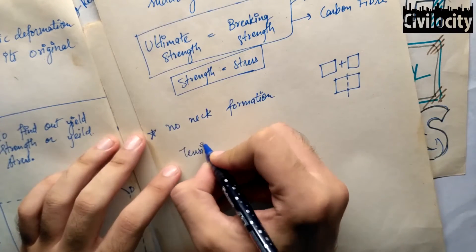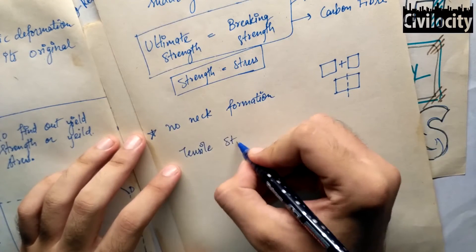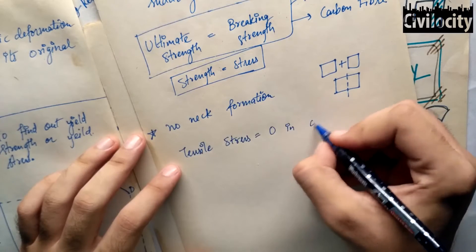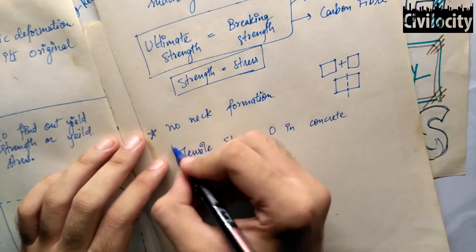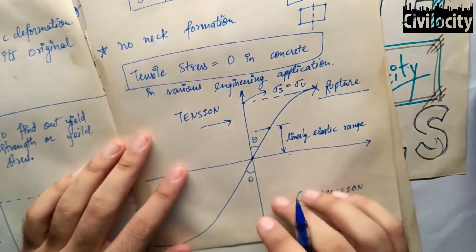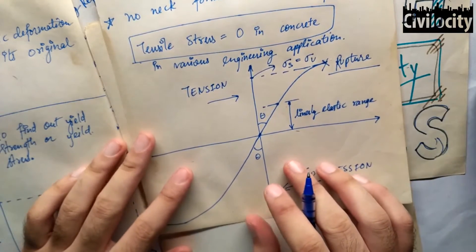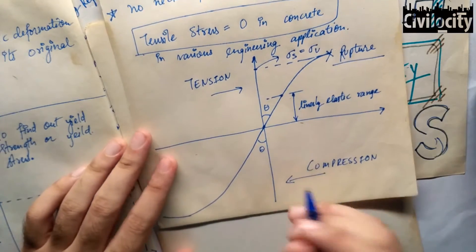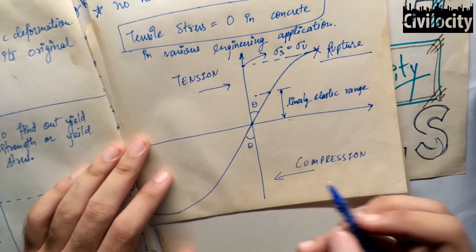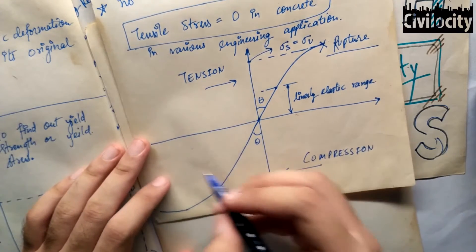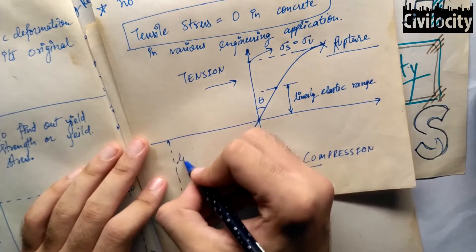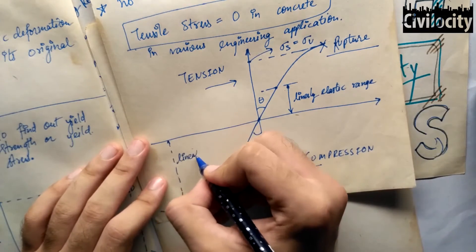The graph of brittle materials is kind of linear, and for some materials like concrete, tensile strength is negligible compared to compressive strength and is assumed to be zero for many engineering applications. The strain at rupture is very much smaller compared to ductile materials. Rupture stress equals ultimate stress in brittle materials in tension, no necking occurs, rupture occurs along a surface perpendicular to the load, and normal stresses are primarily responsible for the failure of brittle materials.